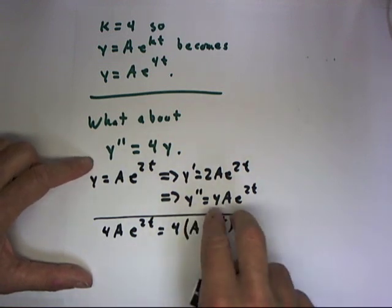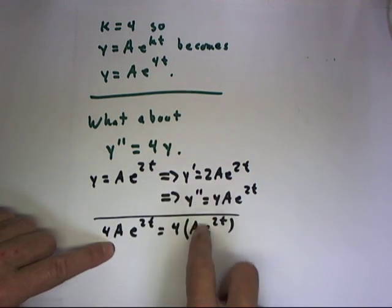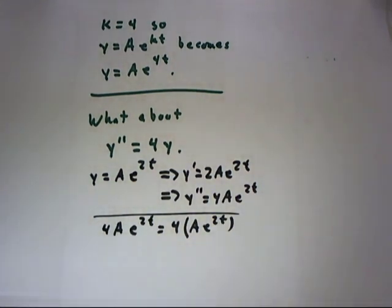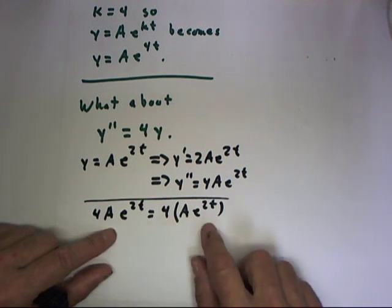In other words, substituting this expression for y double prime, we get this. Substituting this expression for y, we get this. Clearly an identity. So we can easily find a solution. Now, something about this should bother you.